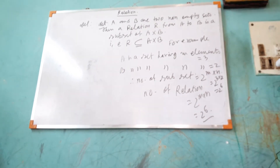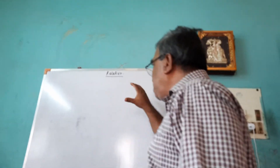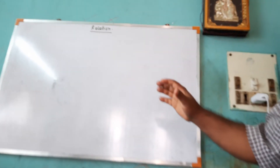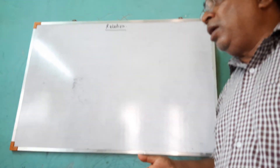Now I am coming to the next topic, that is types of relation. I have given the basic definition and examples of relation. Now, what are the types of relation?